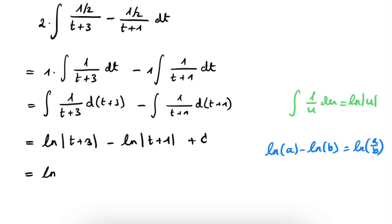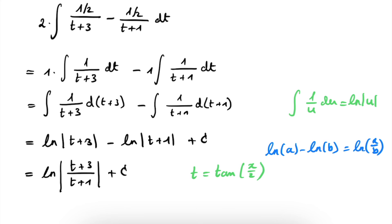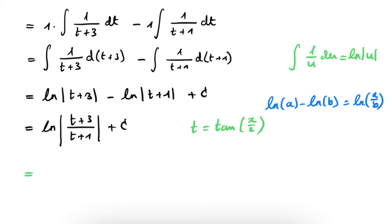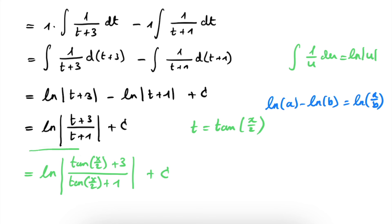One last step: we resubstitute T equals tangent of x divided by 2 to express our answer in x. Our final result is the logarithm of the absolute value of (tangent of x over 2 plus 3) divided by (tangent of x over 2 plus 1), plus C. This is our final result for this integral using the T-formulas.